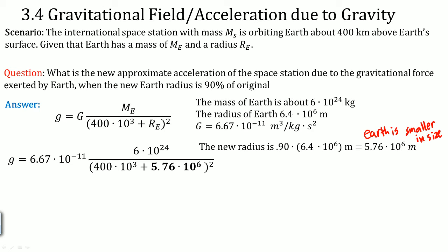We can now plug in the values like before. And the answer here is g is approximately 10.547 meters per second squared.